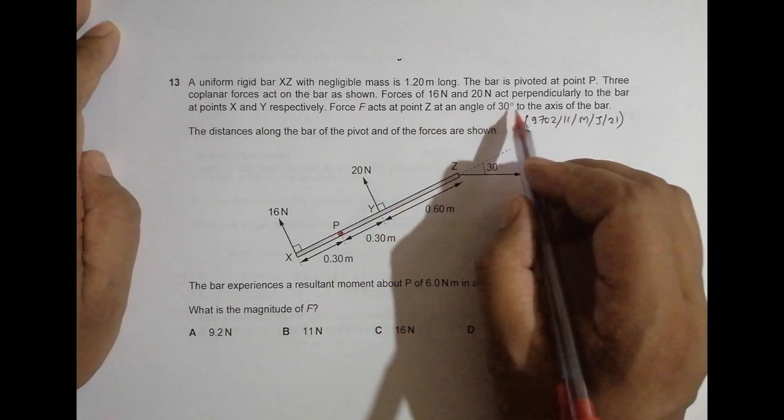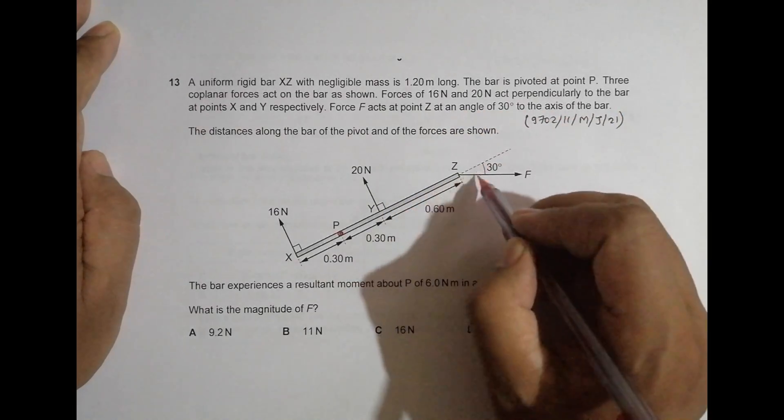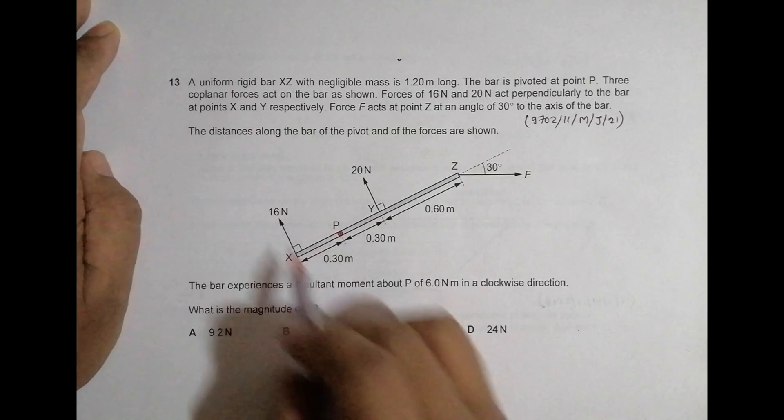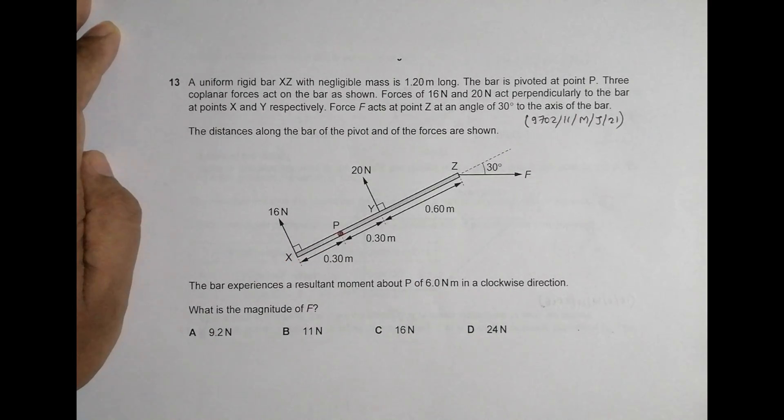At an angle of 30 degrees to the axis of the bar, so it is the axis of the bar and the angle is 30 degrees. The distances along the bar of the pivot and of the forces are shown.